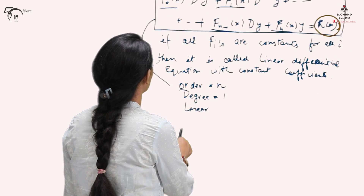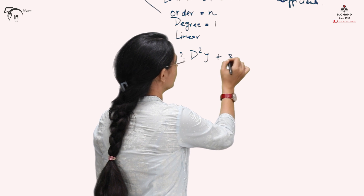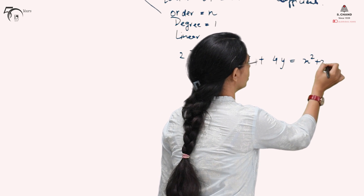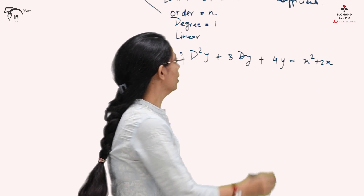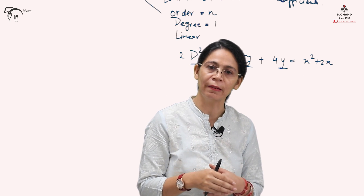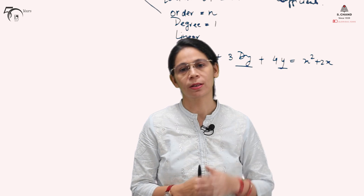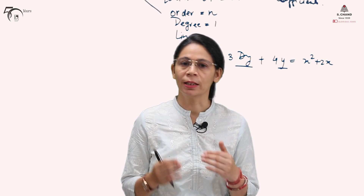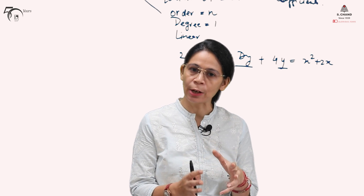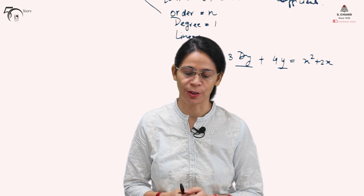For example, 2 d²y/dx² + 3 dy/dx + 4y = 2x² + 2x. Here the right-hand side has a function of x, but the coefficients of the dependent variable and its derivatives — which are 2, 3, and 4 — are all constants and do not contain any function of x. So this is called a linear differential equation with constant coefficients.